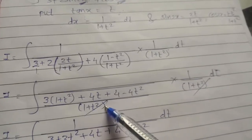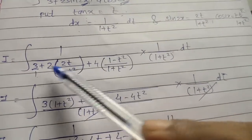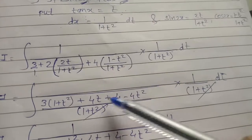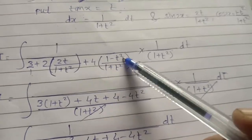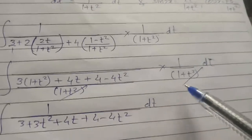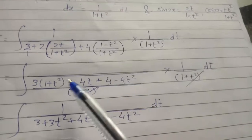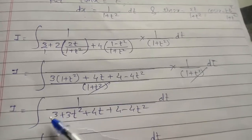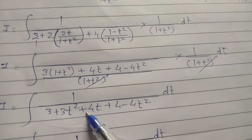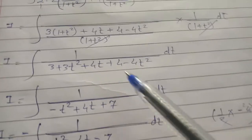Substituting all values: I equals integration of 1 upon [3 plus 2 times (2t upon 1 plus t square) plus 4 times (1 minus t square upon 1 plus t square)] times 1 upon (1 plus t square) dt. Taking LCM (1 plus t square): the denominator becomes 3(1 plus t square) plus 4t plus 4 minus 4t square. Multiplying out: 3 plus 3t square plus 4t plus 4 minus 4t square, giving minus t square plus 4t plus 7.